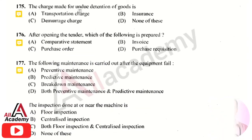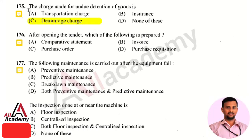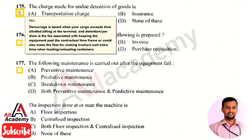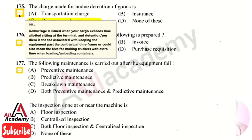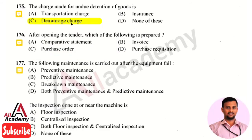The next question is: the charge made for undue detention of goods is? The right answer is a demurrage charge. Demurrage is issued when your cargo exceeds the time allotted at the terminal — that is the demurrage charge.